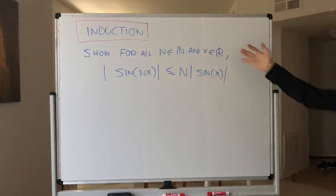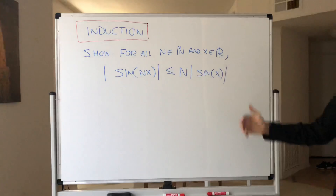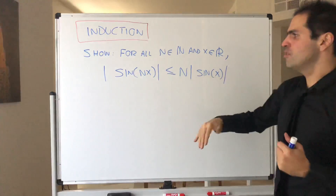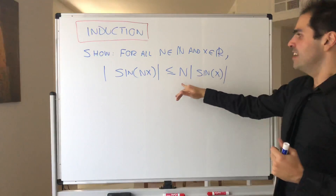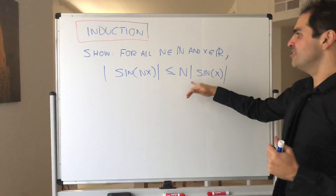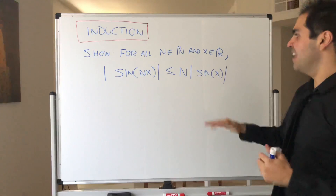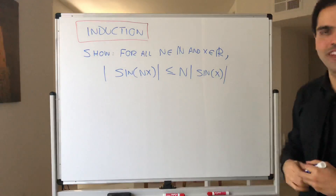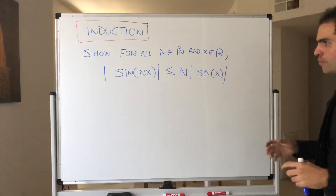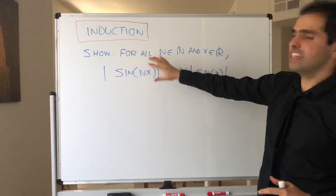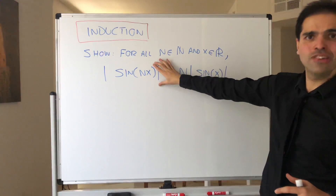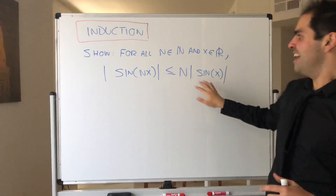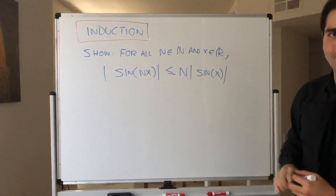So let's show this very neat result, namely that the absolute value of sine of nx is always less than or equal to n times the absolute value of sine of x. In other words, this function in absolute value is always smaller than n times this function.